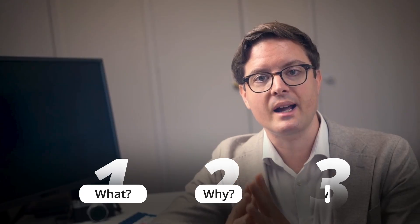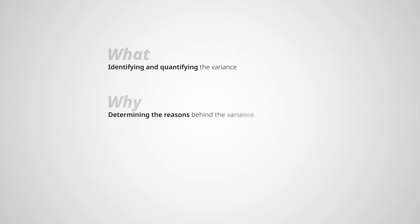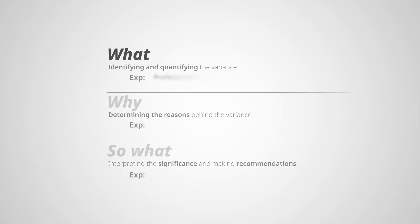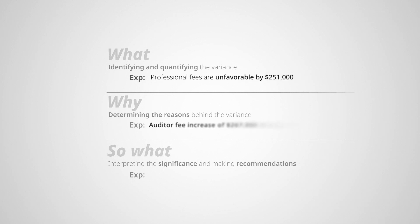Finally, let's talk about variance analysis — explaining why business performance differs from expectations. You need to focus on three components: the what, the why, and the so what. The what is identifying and quantifying the variance. The why is determining the reasons behind it. The so what is interpreting the significance and making recommendations. Here's a real example: the what — professional fees are unfavorable by $251,000. The why — this is primarily driven by an auditor fee increase of $267,000.